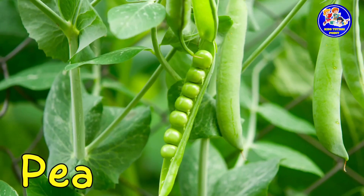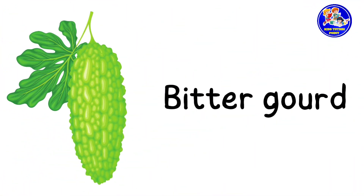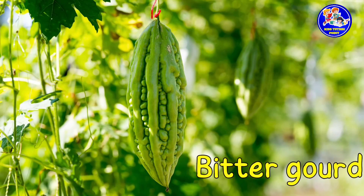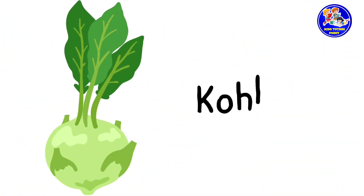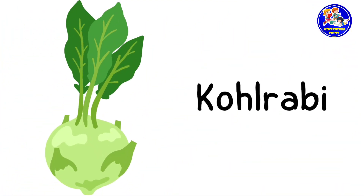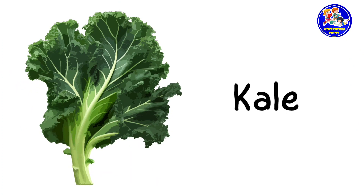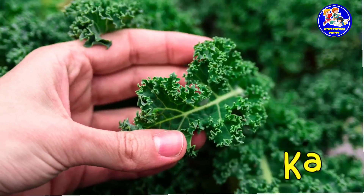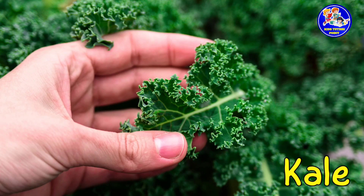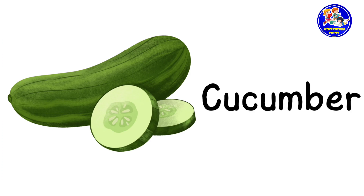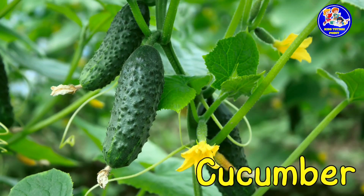Pea — this is pea. Bitter gourd — this is bitter gourd. Kohlrabi — this is kohlrabi. Kale — this is kale. Cucumber — this is cucumber.